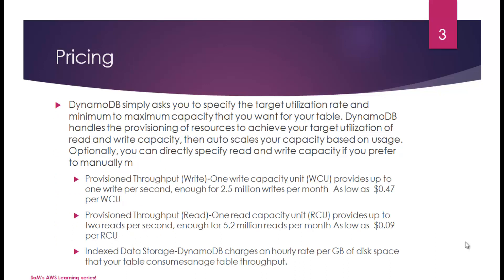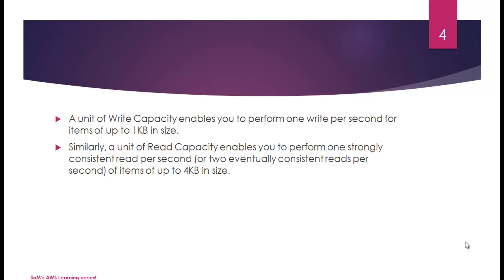The DynamoDB pricing model asks you to specify the target utilization rate and minimum to maximum capacity for your table. It is based on three attributes: provisioned throughput write, provisioned throughput read, and index data storage. A unit of write capacity enables one write per second for items up to 1 KB. A unit of read capacity enables one strongly consistent read per second or two eventually consistent reads per second for items up to 4 KB.